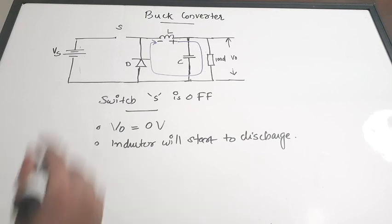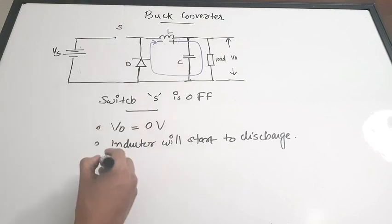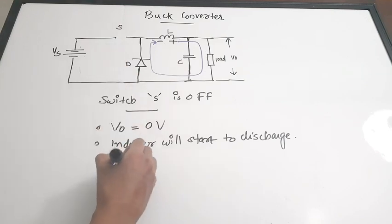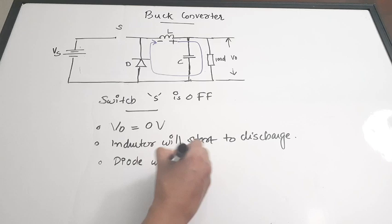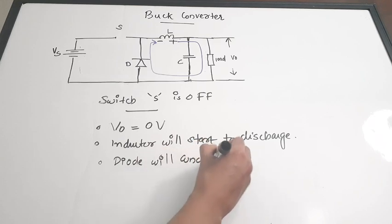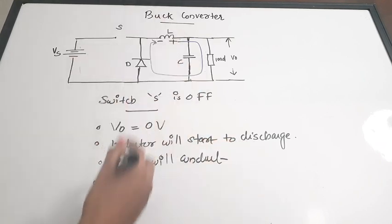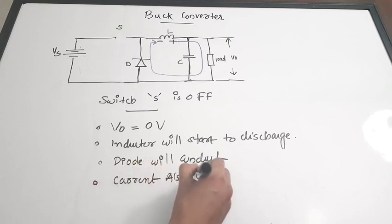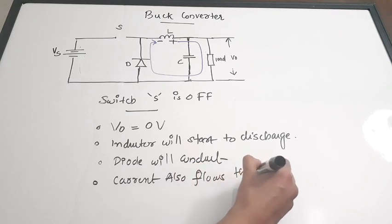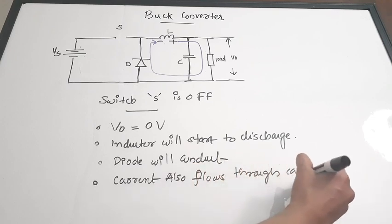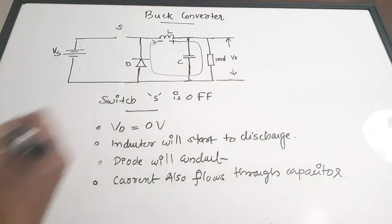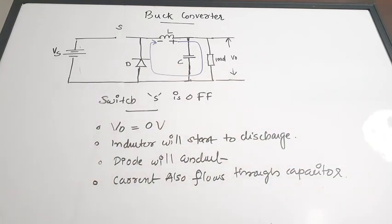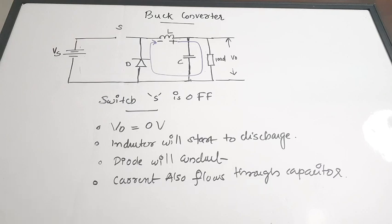When the switch is off, the current flows through the diode, so the diode will conduct. The current also flows through the capacitor. So: the diode is conducting, current flows through the capacitor, the inductor is discharging with reversed polarity, and V_out is zero volts.